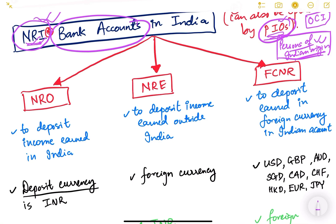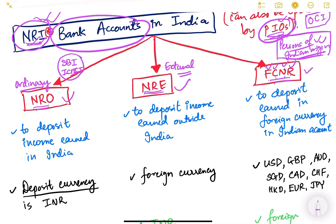NRI people can open three types of bank accounts in India. First is the NRO account — non-resident ordinary account, where O stands for ordinary. Second is the NRE account — non-resident external account, where E stands for external. Third is FCNR — foreign currency non-resident account. These accounts can be opened in Indian banks like SBI or ICICI, whichever banks provide these facilities.